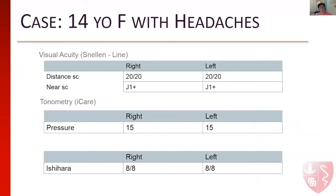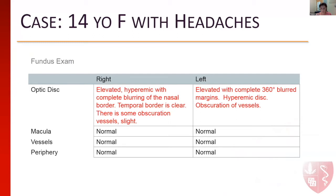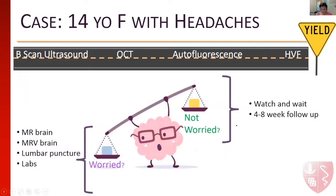At my clinic, her vision was 20-20 near and at distance. Her pressures were normal, and her color plates were normal. Her optic nerve did look abnormal — she had a hyperemic nerve with complete blurring of the nasal border on the right side, and much more blurring of the border on the left side with obscuration of the vessels. Here on your left is her right optic nerve; as you can see, it's a crowded disc. On the left side you can see obscuration of the vessels. She then went through the full imaging suite: a B-scan, OCT, autofluorescence, and a visual field.